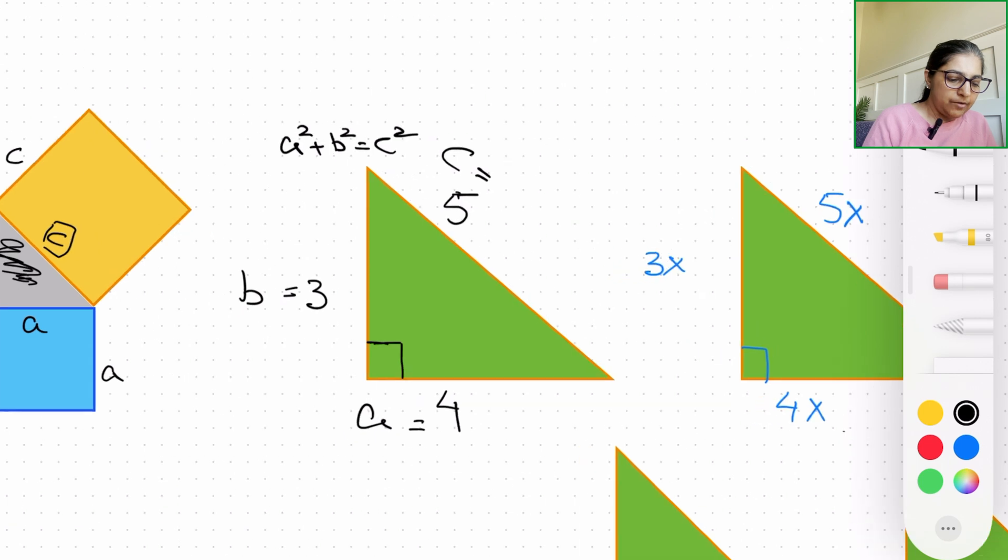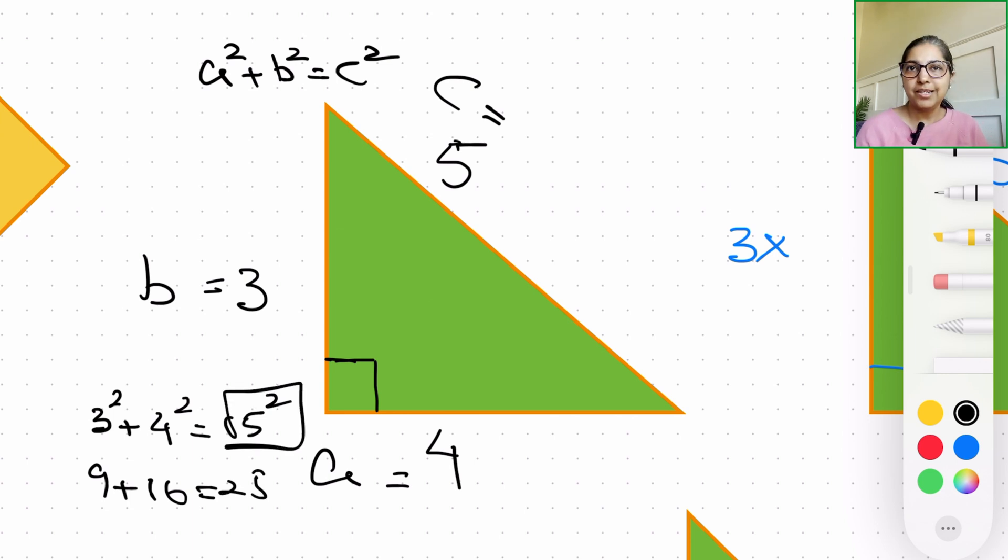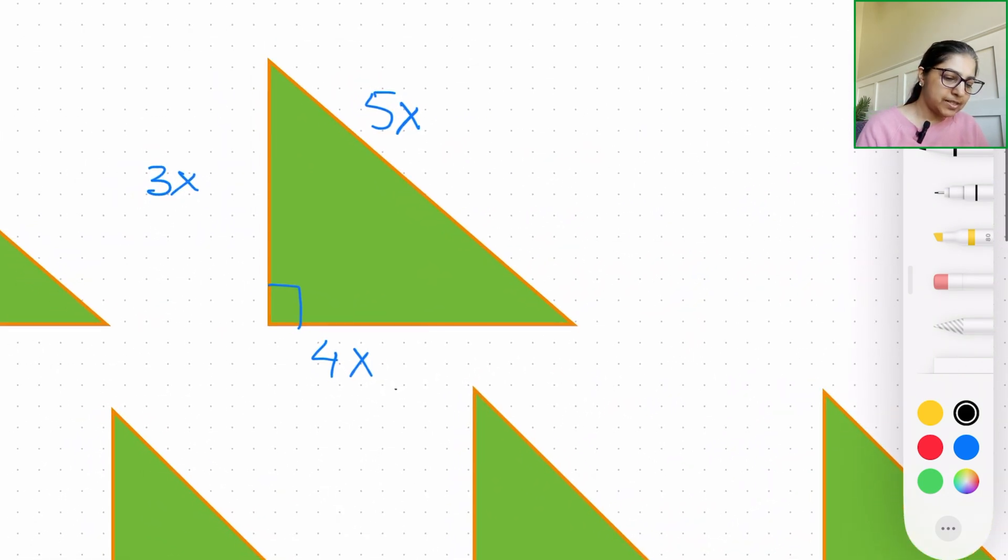So we can see our c value is 5 for this one, and our b value is 3, and our a value is 4. And if you plug in these values into the Pythagorean formula, you will always get 3² + 4² = c². So that's going to be 9, so 9 + 16 will always give you 25, which is exactly nothing but 5². So that's the idea, a special type of right angle triangle.